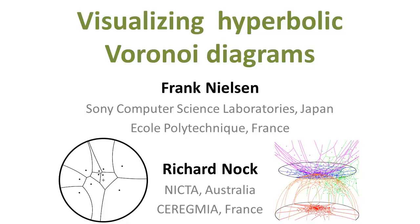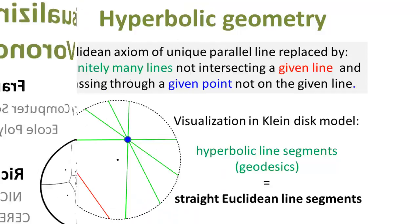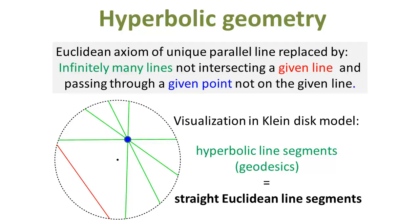Visualizing the Hyperbolic Voronoi Diagrams by Frank Nielsen and Richard Nock. In hyperbolic geometry, there exist infinitely many lines passing through a given point and not intersecting another prescribed line.